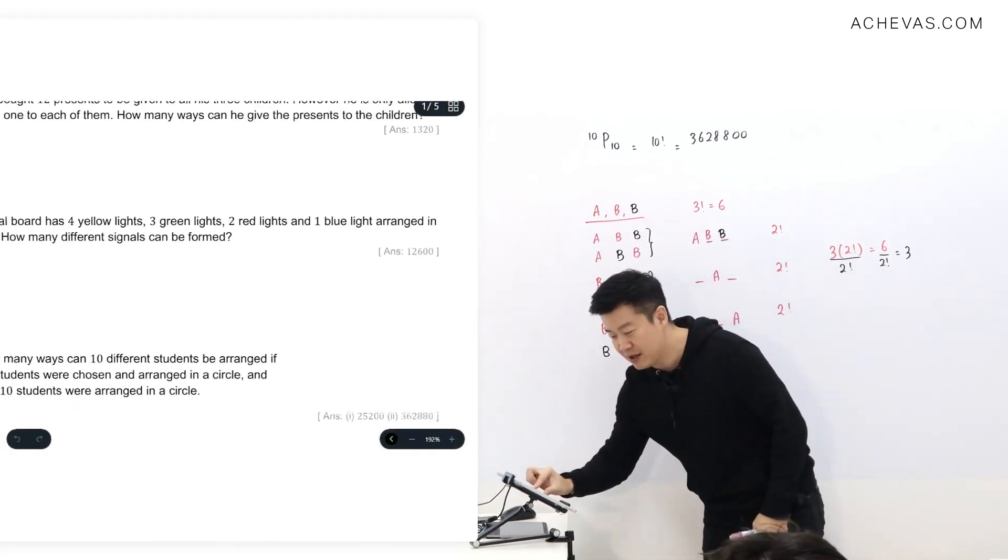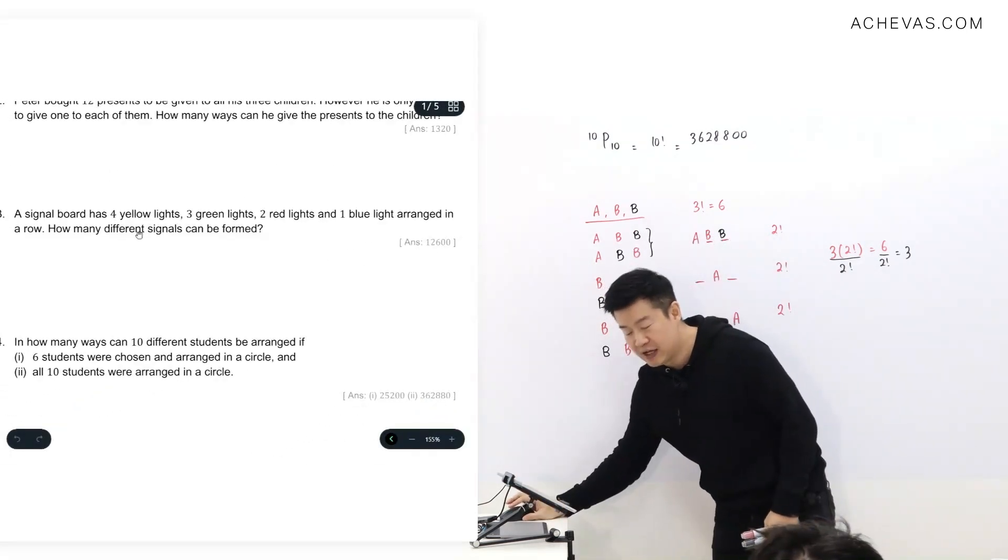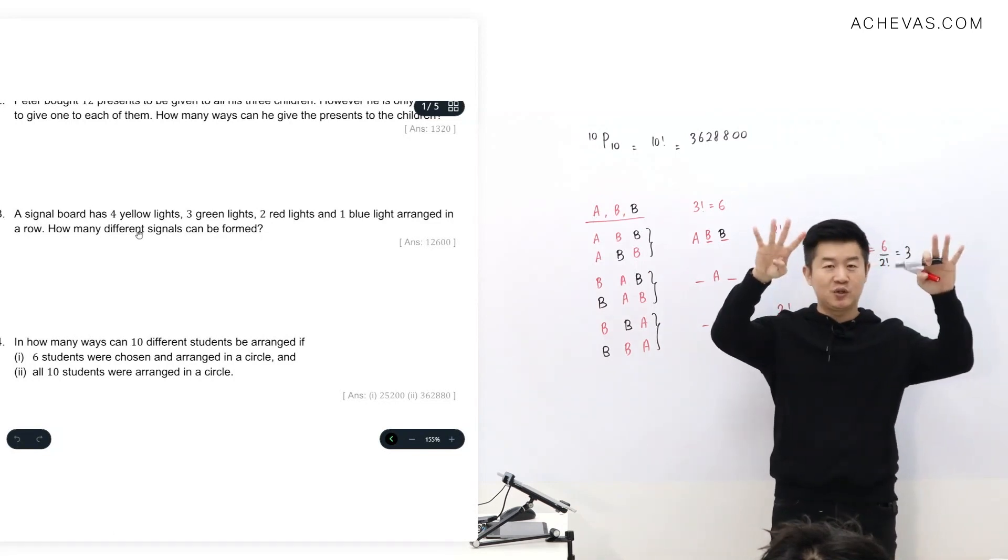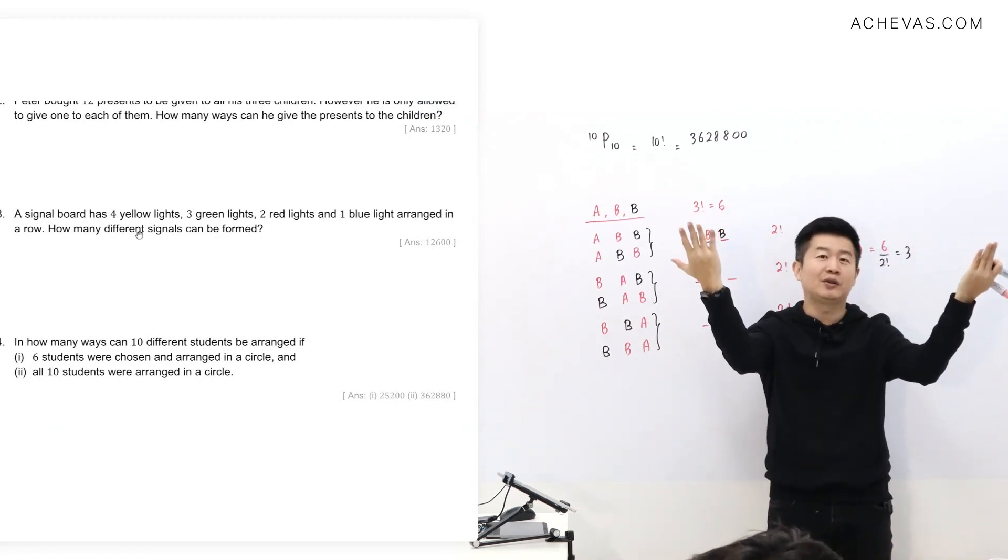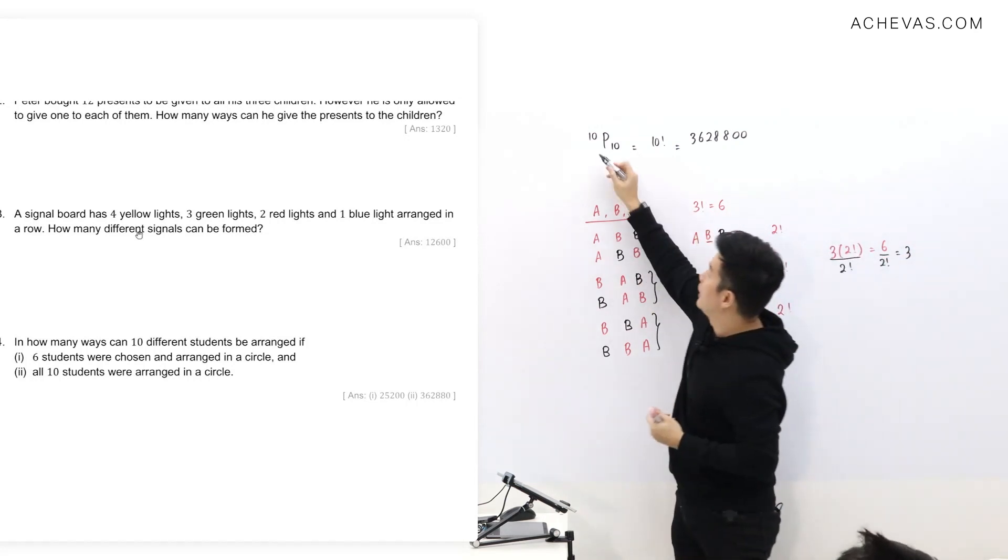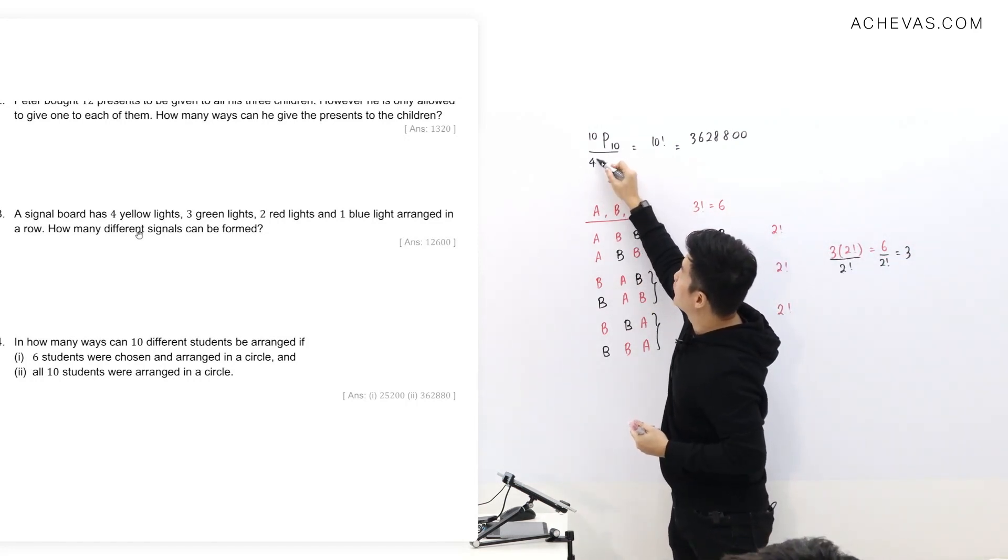Which means that if there were to be 4 yellow lights, if there were to be 4 yellow lights for those positions where I previously assumed that there are 4 different yellow lights, now they are actually the same 4 yellow lights, I will do what? I will divide this by 4 factorial.